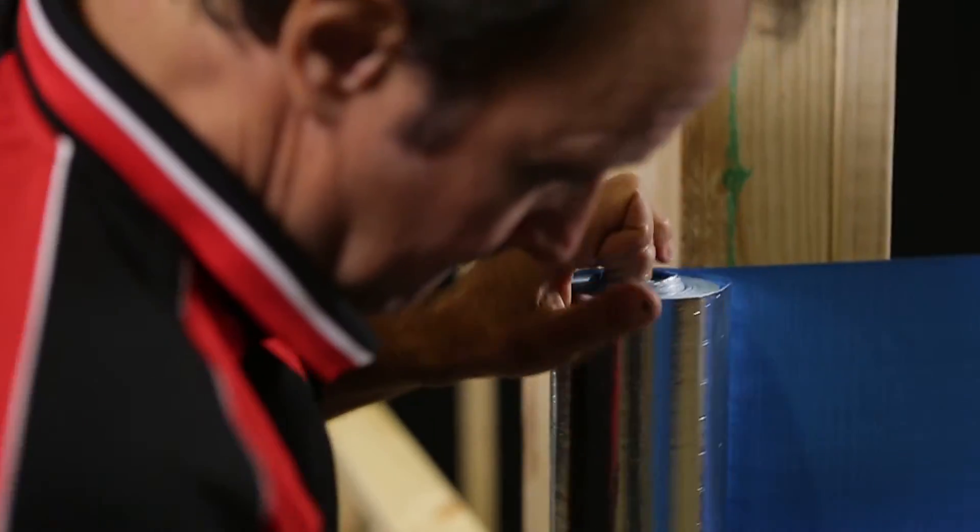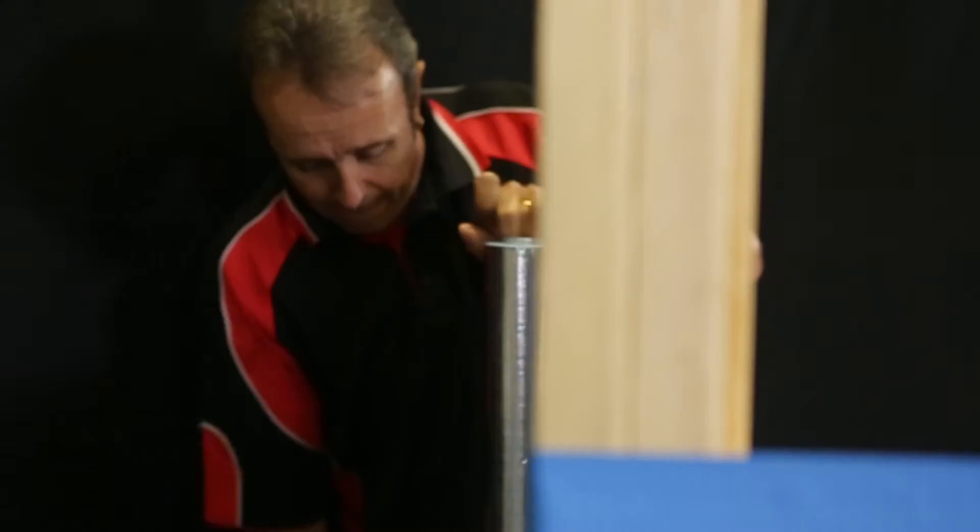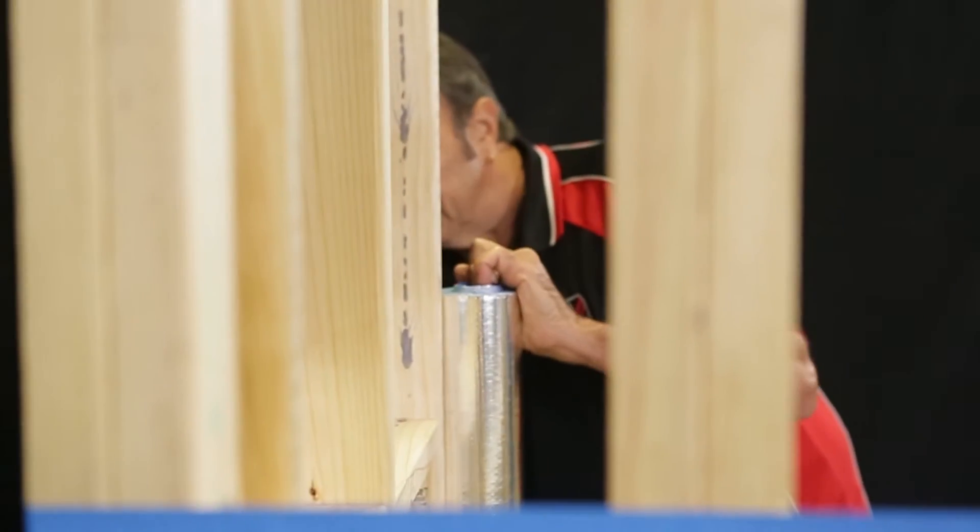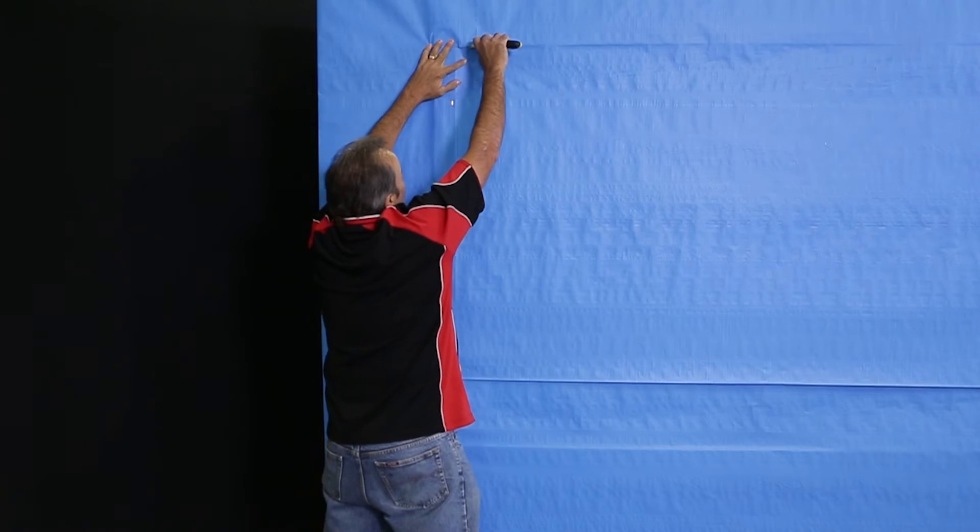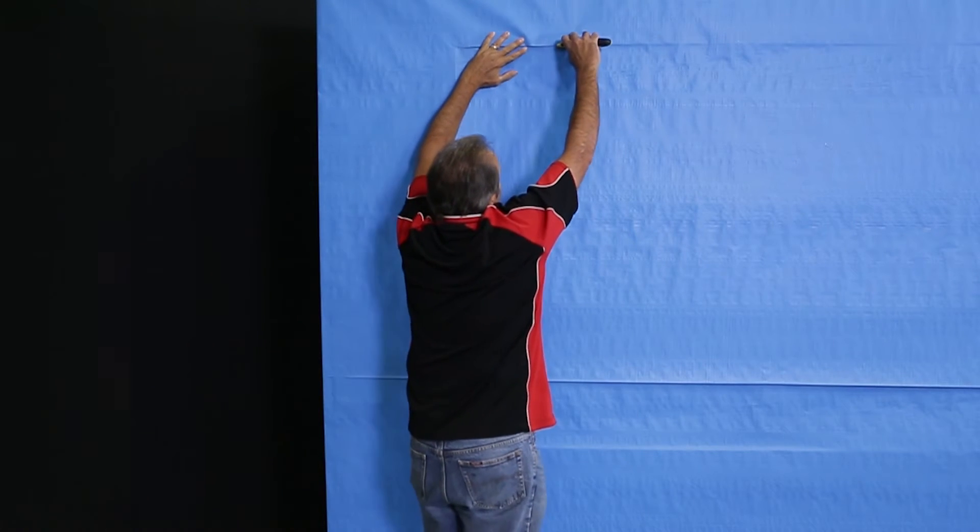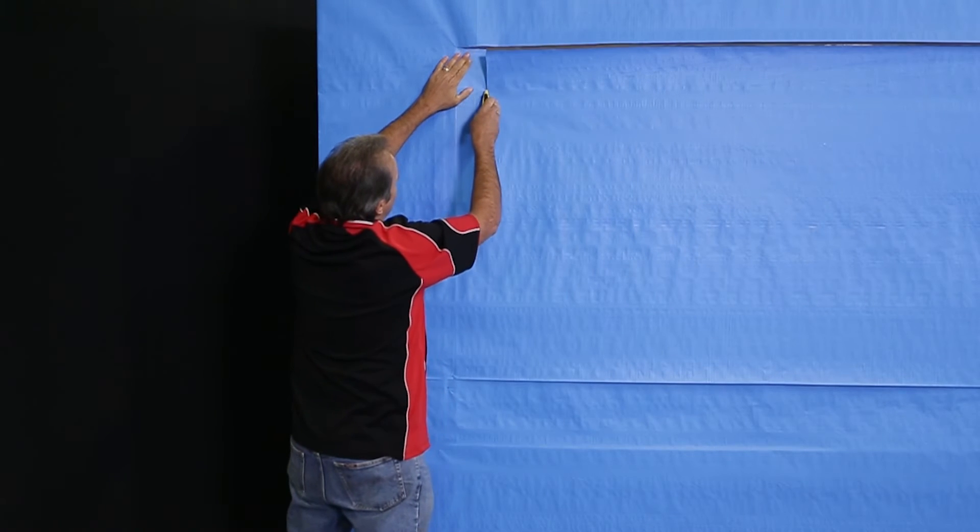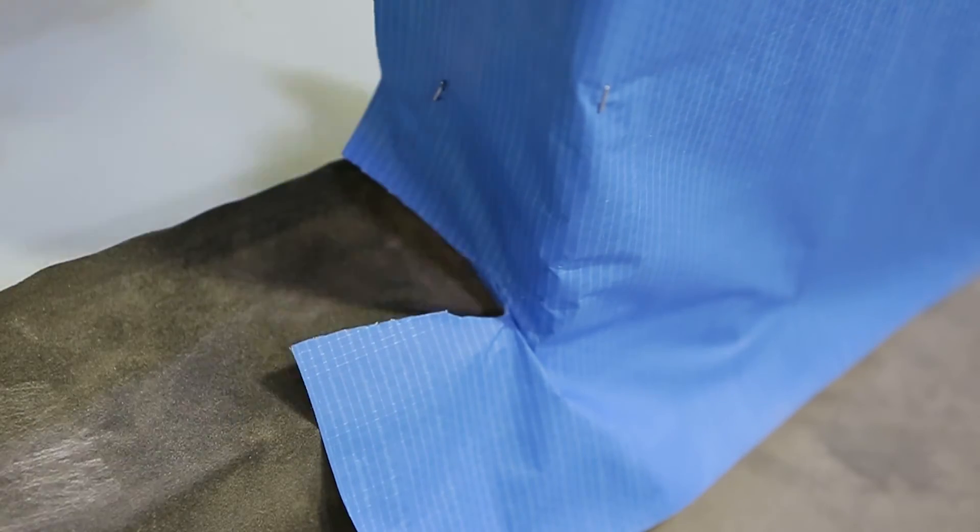Next we need to install the sarking. Fill for the opening from the outside. At the head we cut the sarking off flush with the opening. Cut about a hundred millimeters in from the stud and fold back in like this and staple in place.